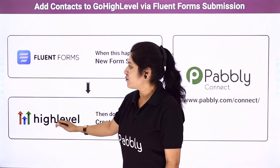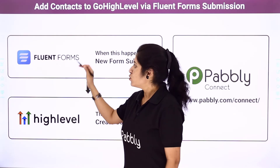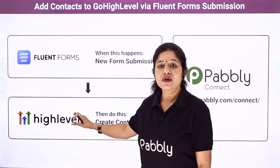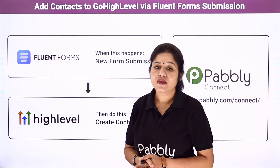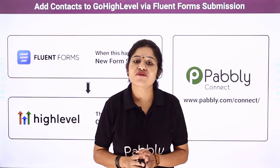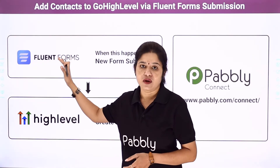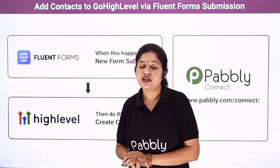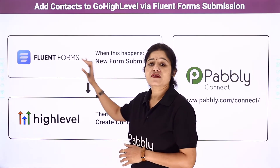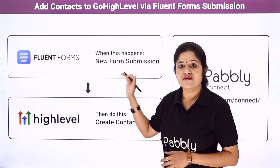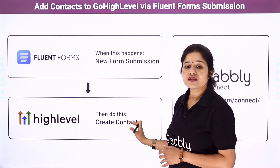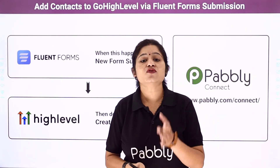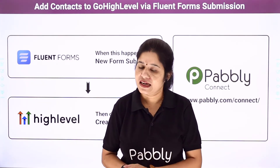First let us understand what these software applications are all about. Fluent Forms is a form building software application and it is a plugin of WordPress, and Go High Level is a CRM software application. The idea here is that you have created a subscriber form using your Fluent Forms account and embedded that form on a website to get the form filled. Now you want that whenever any customer fills that subscriber form, automatically using the details of the form submission, a new contact should get created into your Go High Level CRM account, so that a customer database can be created and you can use those databases for your business related activities.